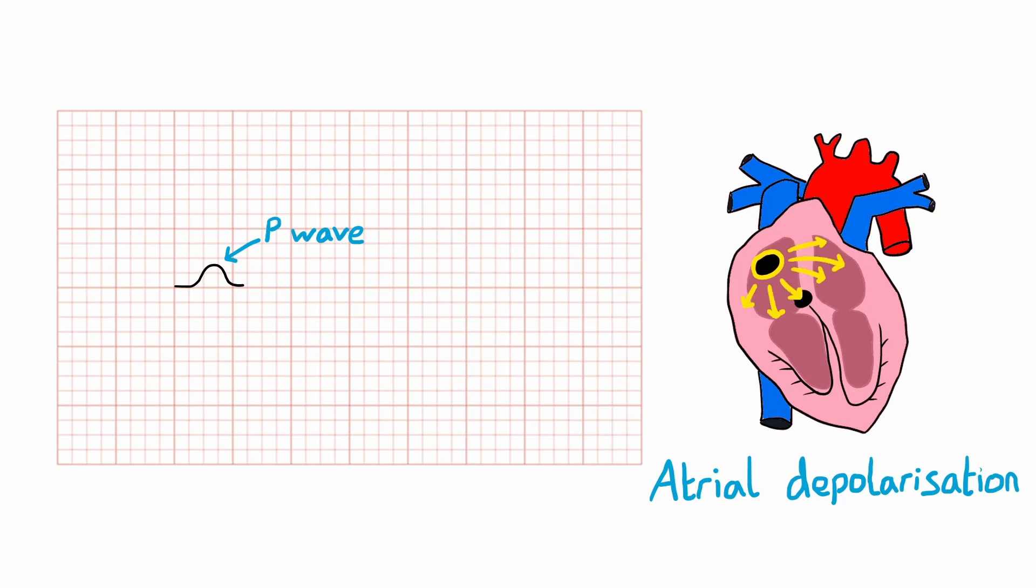The first deflection is the P wave which represents atrial depolarization. It's an upward deflection in most leads because the overall direction of electricity across the atria is moving from negative electrode to positive.